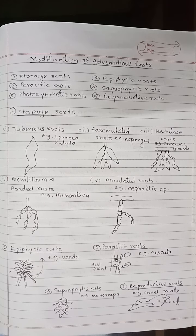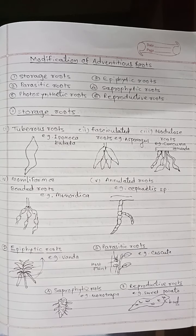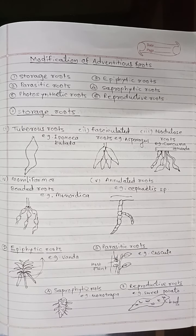The next type is saprophytic roots, also called mycorrhizal roots, as here roots are associated with fungal hyphae either externally or internally. When the fungal hyphae is present externally, it is called ectomycorrhizal, and when the fungal hyphae is found internally inside the root, it is called endomycorrhizal, for absorption of water and minerals. Example: Monotropa.